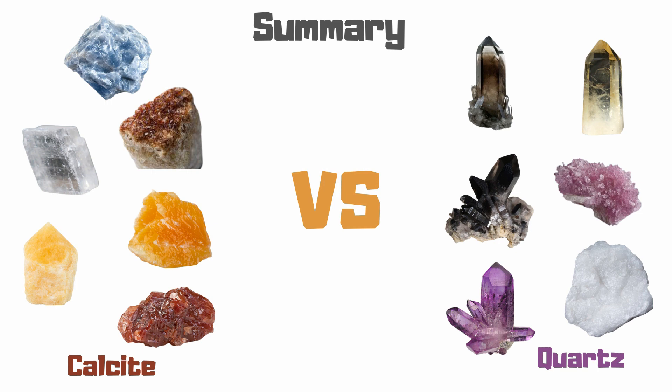7. While calcite has a luster that is vitreous to resinous to dull, quartz has a glassy to vitreous luster.